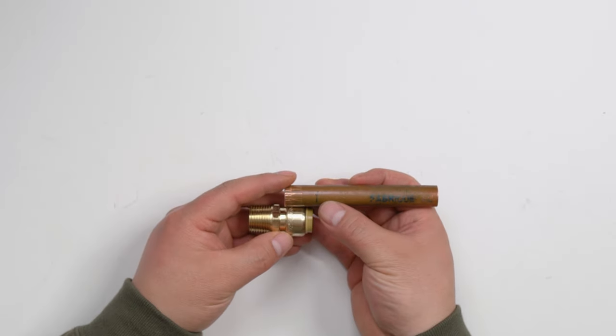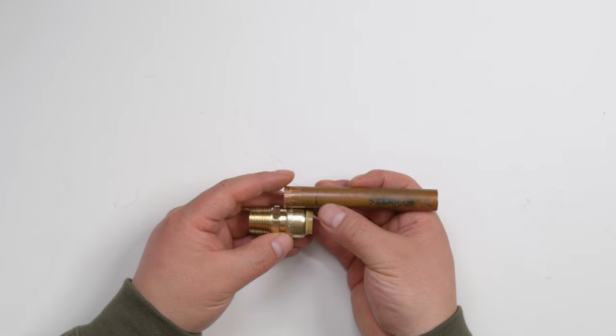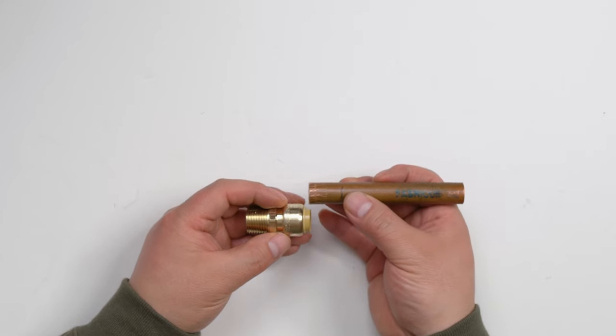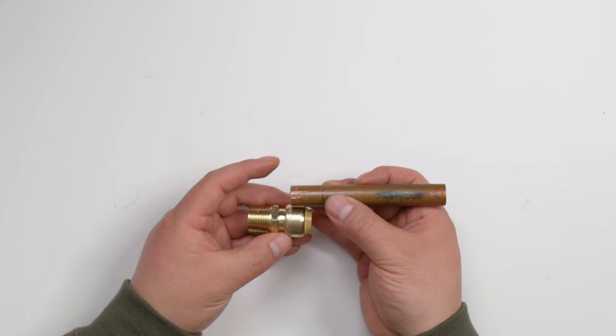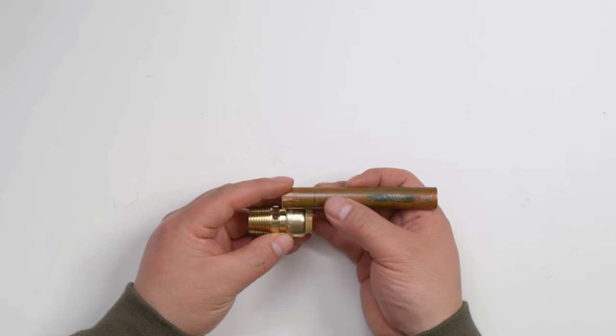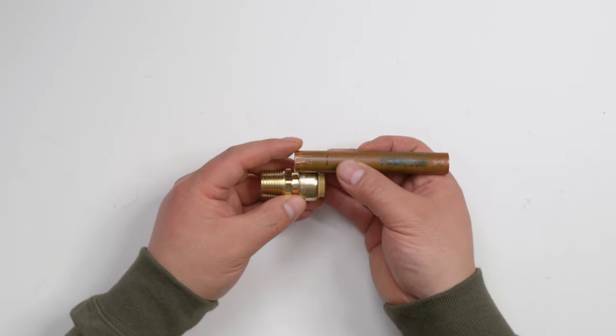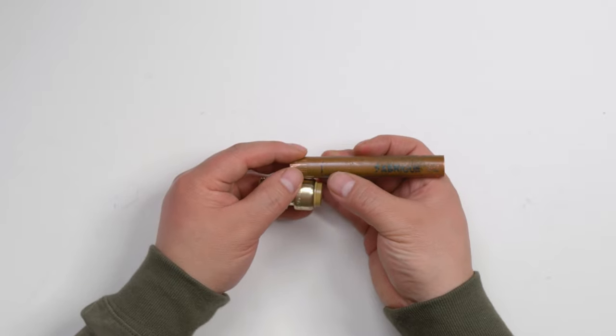So why do we need to make a mark? You're going to make sure that your pipe will pass the grab ring, also pass the O-ring to the middle part. There's a stop. So in this way, you can fully seal. That's why we need to make a mark.